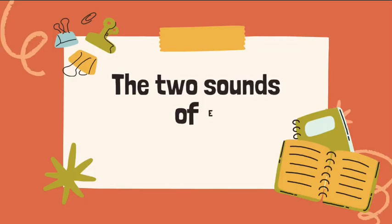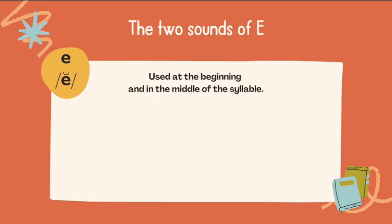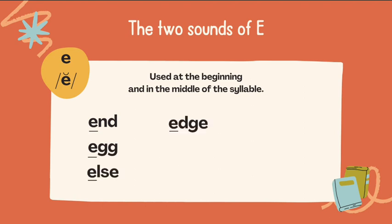The two sounds of E. The short E sound is used at the beginning and in the middle of the syllable. Examples: end, egg, else, edge, effort.